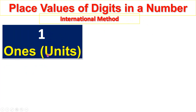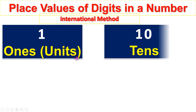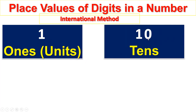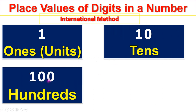Ones are units. Units, tens — this is the tens position. Units, tens, hundreds.